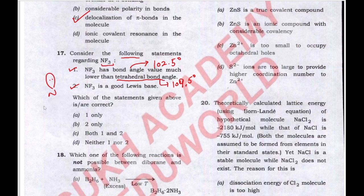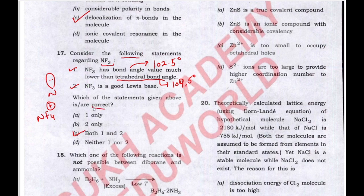NF3 can easily form NF4 positive, confirming it is a good Lewis base. So both statements are correct, and the correct answer is C — both 1 and 2.